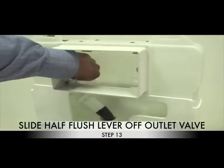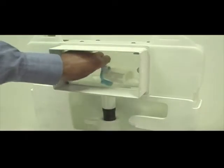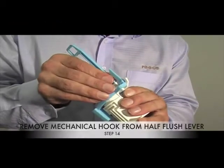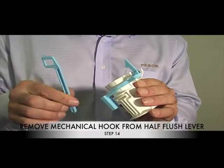Step 13: Slide the half flush lever off the outlet valve by bending the outlet valve. Step 14: Remove mechanical hook from half flush lever. You will no longer require the hook.